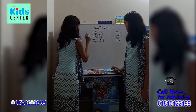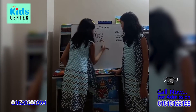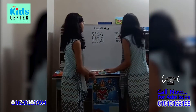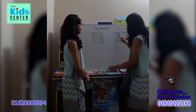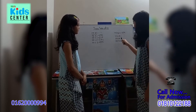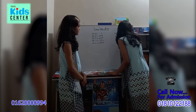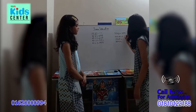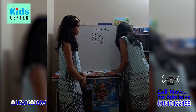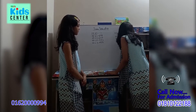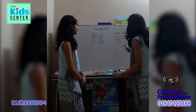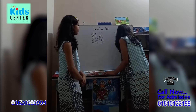9 times 5 is 45. Now I will put this 9 here. Oh, that's easy — I want to try it! 9 times 6 is 54. Now I'll put this 9 here. 9 times 7 is 63. Now I'll put this 9 here. 9 times 8 is 72. Now I'll put this 9 here. And the last one — 9 times 9 is 81.